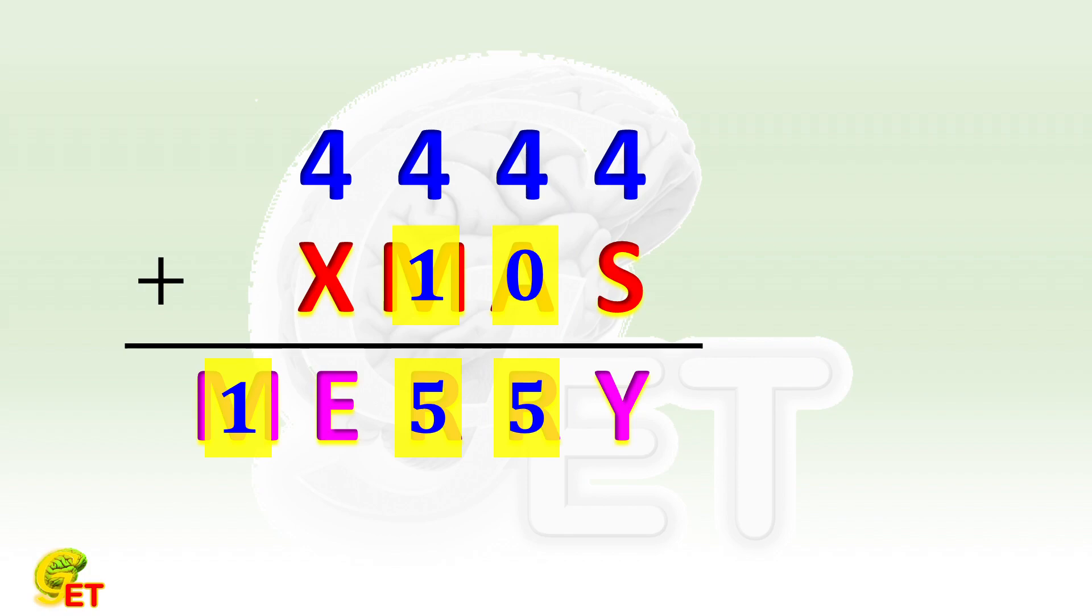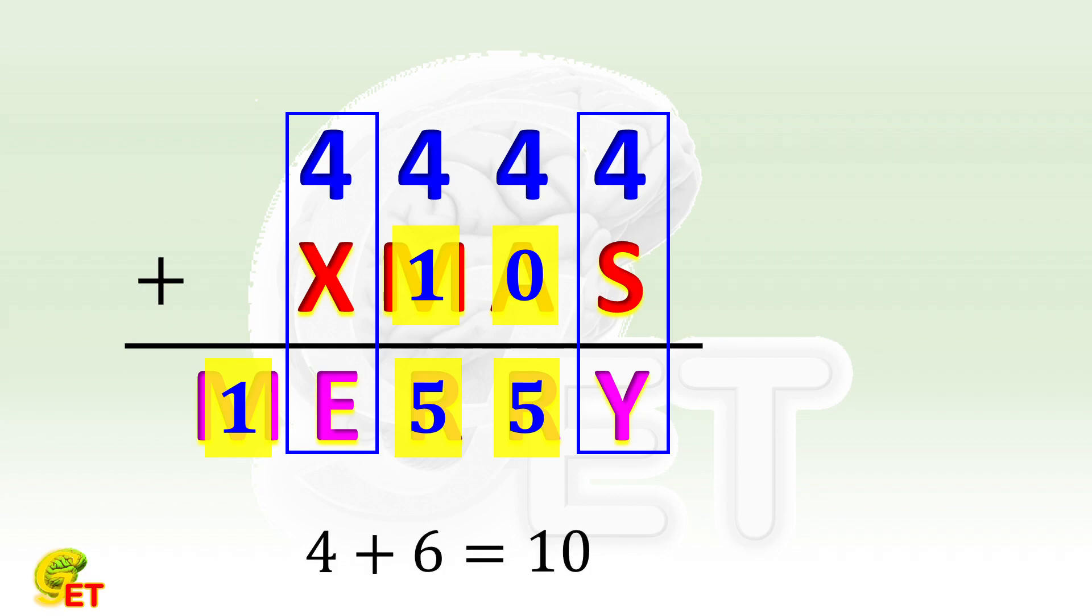Then in the places of 4 plus X and 4 plus S, there are both carries. For a carry, the minimum is 6, so that 4 plus 6 equals 10. But A is already 0, so 4 plus 6 will not work. 4 plus 7 equals 11, but M is already 1, so it doesn't work either.